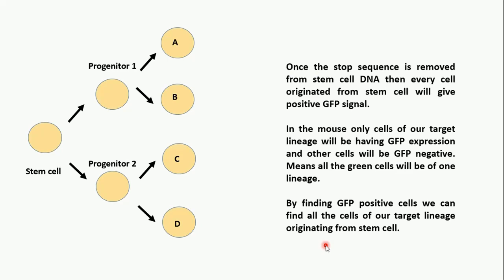As a real example: regulatory T cells have FoxP3 as their specific transcription factor. If we add the Cre sequence under the promoter of FoxP3 and cross it with our reporter mouse, all T-regs will become GFP positive. You can trace any lineage if you have knowledge of a specific protein expressed in the stem cell of a particular lineage. The reporter mouse is already commercially available — you just need to create a Cre mouse based on your target cells, cross them to create a heterozygous mouse, and look for GFP-positive or other reporter signals such as RFP, YFP, etc. All fluorescent cells will be from one lineage.